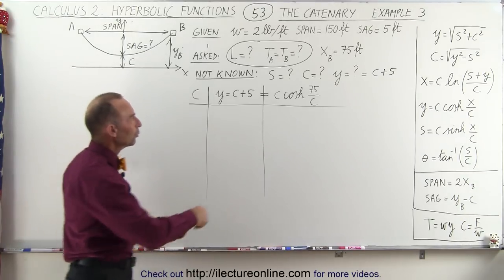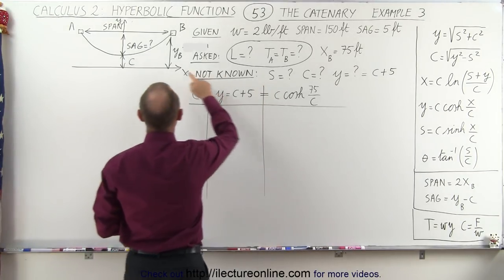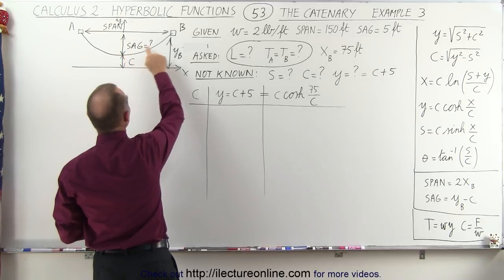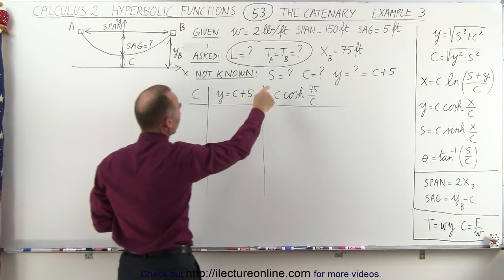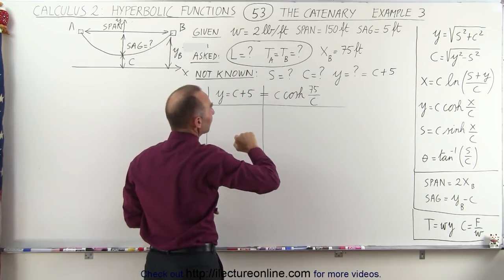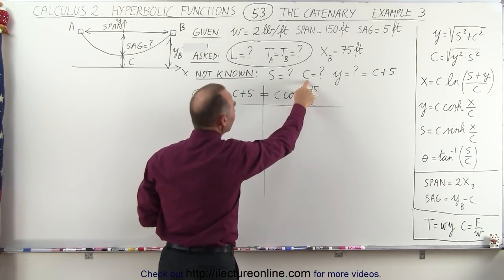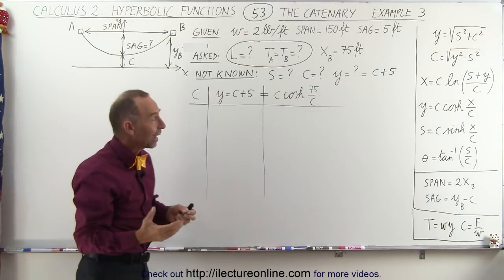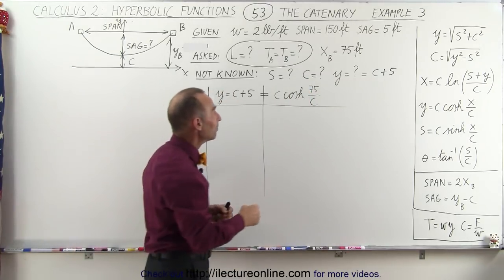What we don't know is s, the length of the cable from the lowest point on the cable to one of the supports, which of course twice the s would be equal to L. So once we find s we will indeed find L. And we're not given c, and that's always a big problem because the hyperbolic functions have c in it two times.